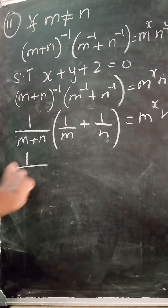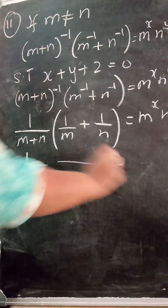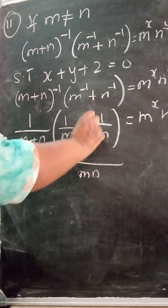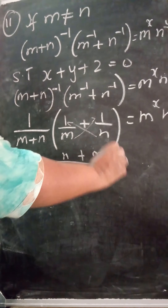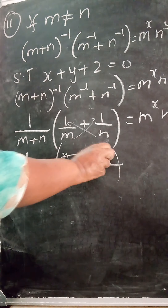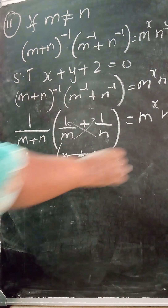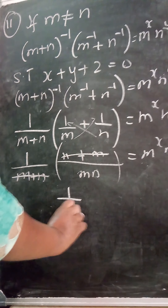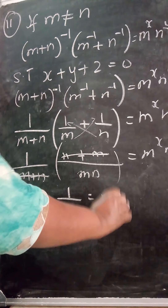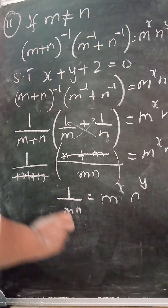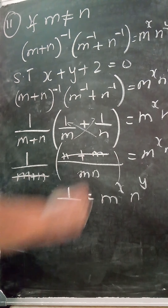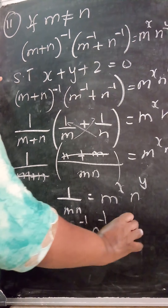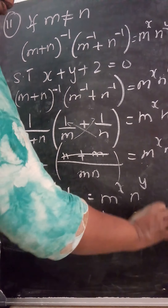So I am left with 1/(mn) = m^x · n^y. Since 1/(mn) can be written as m^(-1) · n^(-1), and the bases are the same, I can equate: x = -1 and y = -1.